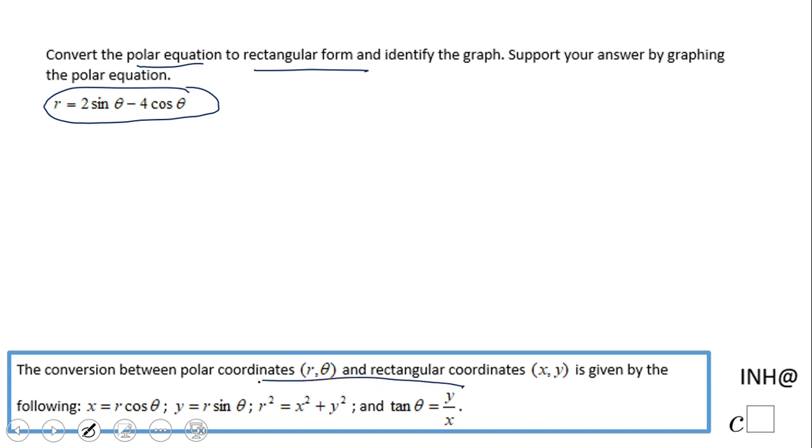We're going to need to use this equation you see down here. So first of all, let me copy that equation: r equals 2 sine theta minus 4 cosine theta. The first thing you want to do here is to multiply both sides of the equation by r.